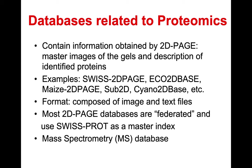Databases related to proteomics contain information obtained by 2D-PAGE — not 1D but 2D — with mass images and descriptions of identified proteins. Examples include 3D-PAGE and similar databases named around 2D-PAGE and proteomics. The format is composed of image and text files. Most 2D-PAGE databases are federated, meaning they are controlled by a federation, and they use SwissProt as a master index. There is also a mass spec database associated with them.